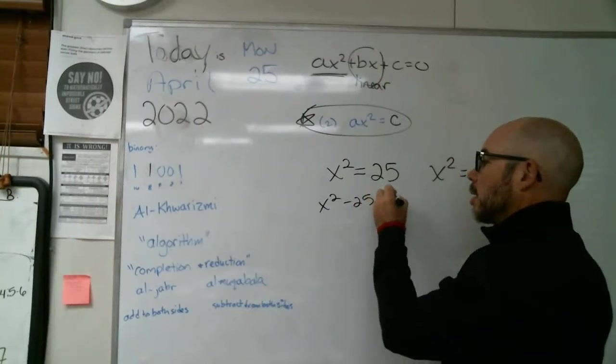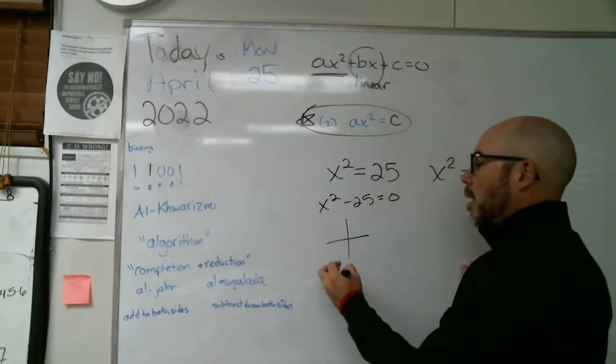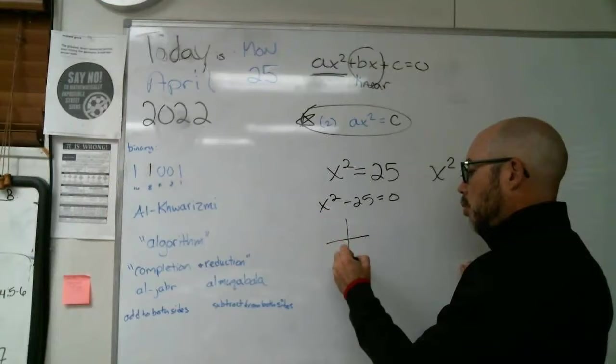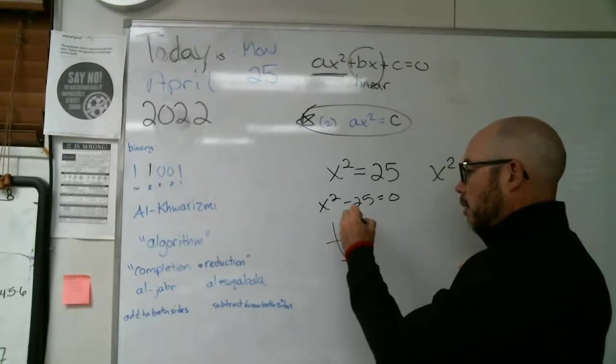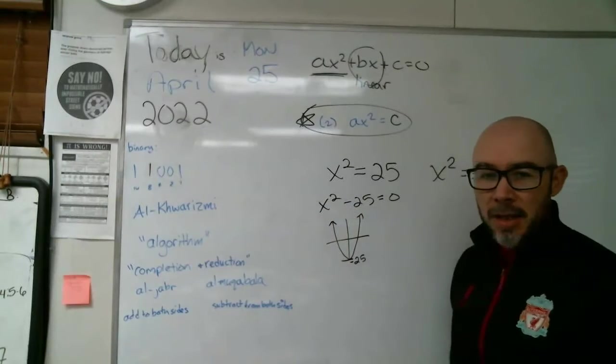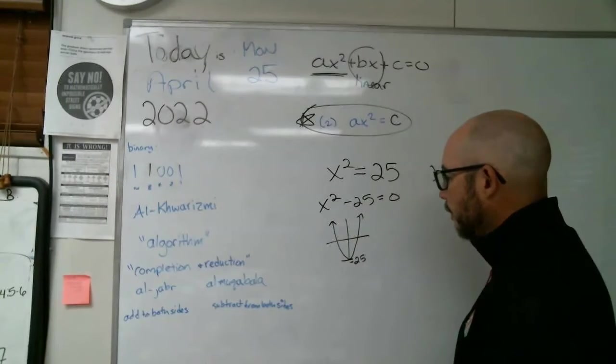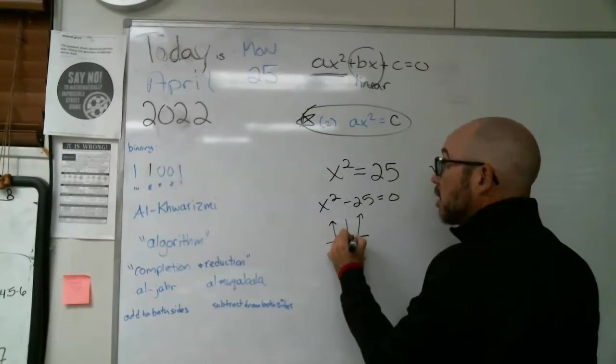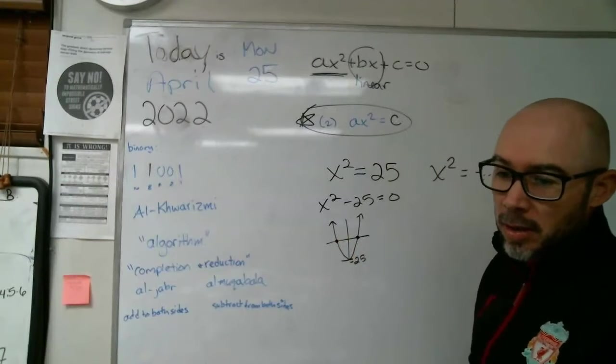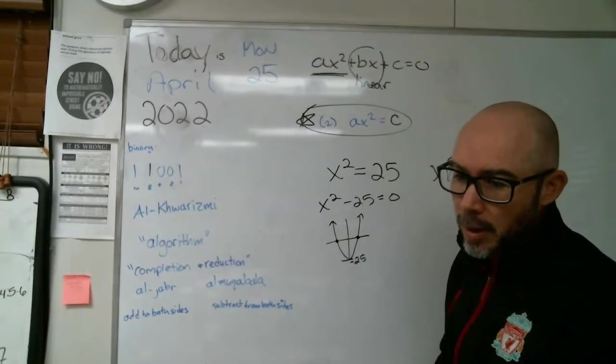And this one's a pretty easy solve. We could change its form and have it as x squared minus 25 by reduction, subtracting from both sides. And that would be a parabola that crosses way down here at negative 25. I think you would recognize that. You could graph it pretty quickly.